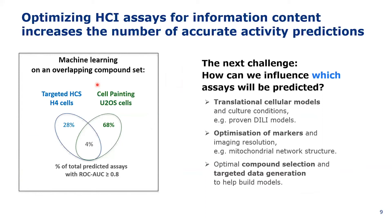An important question for us was whether the cell painting protocol feeds richer and more relevant information into the machine learning algorithms than repurposing older existing high-content screening datasets. The results are encouraging: for the same set of compounds tested, the cell painting protocol supports about twice the number of assay predictions. However, we do not have much control over which assays will be predicted, and we would like to bias that towards more relevant models. We think we can gain something by adopting more relevant cellular models — for instance, if you try to predict drug-induced liver injury, there are probably more relevant models than U2OS cells. We can also work on which markers we capture and at which resolution, and on the selection of compounds to screen.